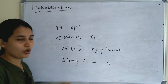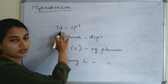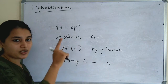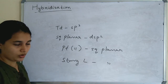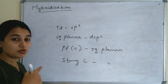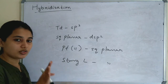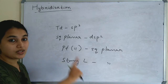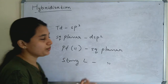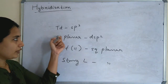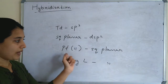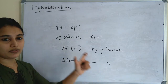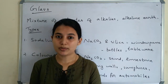One more important point: for d-block elements, the tetrahedral structure always has sp3 hybridization, and for square planar structure the hybridization is dsp2. Also important: for platinum(II) complexes the structure is always square planar. And for strong ligands, the structure is always square planar. So remember: tetrahedral → sp3; square planar → dsp2; and Pt²⁺ complexes and strong ligands are always square planar.